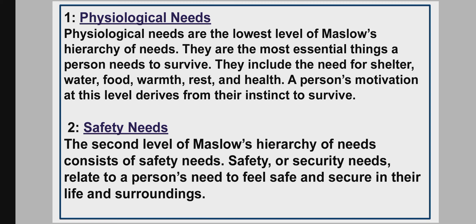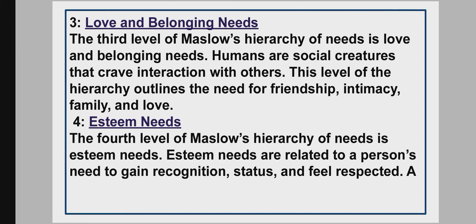The second level of Maslow's hierarchy consists of safety needs. Safety or security needs relate to a person's need to feel safe and secure in their life and surroundings. The third level is love and belonging needs. Humans are social creatures that crave interaction with others. This level outlines the need for friendship, intimacy, family, and love.